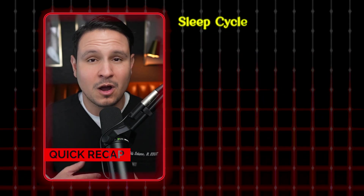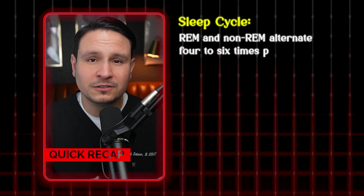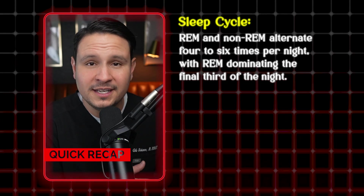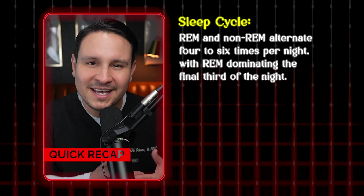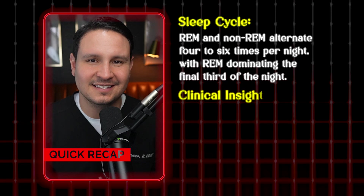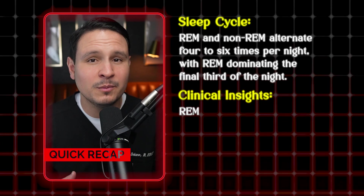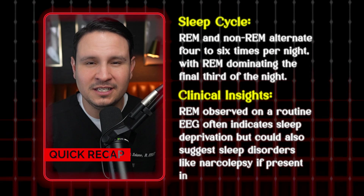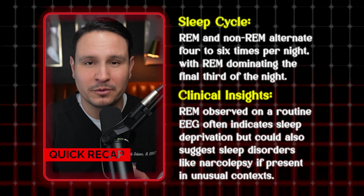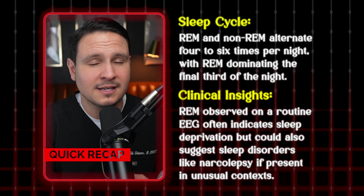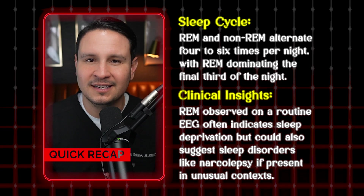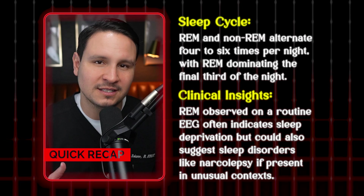Sleep cycle: REM and non-REM alternate four to six times per night, with REM dominating the final third of the night. Clinical insights: REM observed on a routine EEG often indicates sleep deprivation, but could also suggest sleep disorders like narcolepsy if present in unusual contexts.